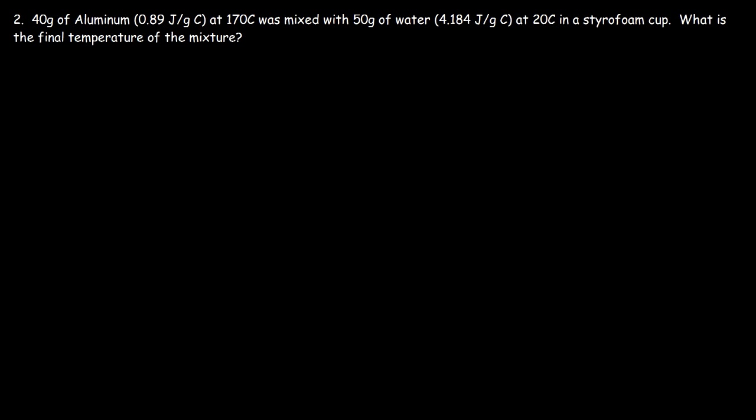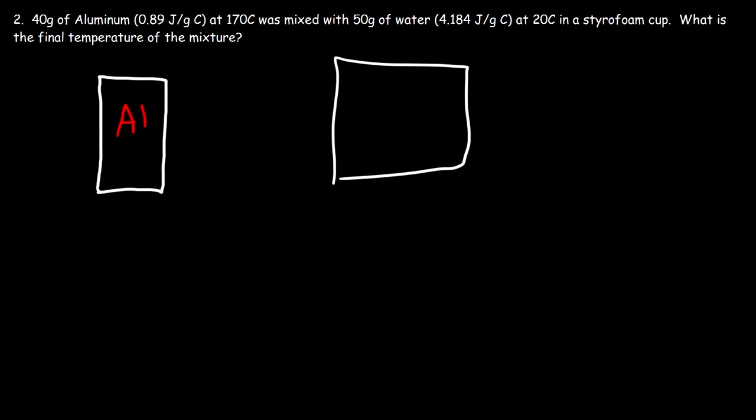Let's move on to number two. 40 grams of aluminum at 170 degrees Celsius was mixed with 50 grams of water at 20 degrees Celsius in a styrofoam cup. What is the final temperature of the mixture? The purpose of the styrofoam cup is to provide insulation — it prevents heat from being radiated from inside the cup to the outside environment, reducing the loss of heat energy. Heat is going to flow from the aluminum metal to the water.